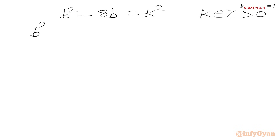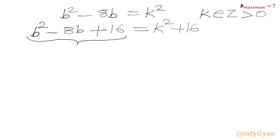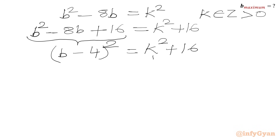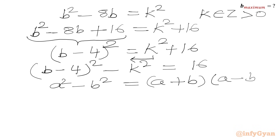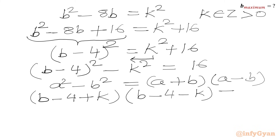We apply the completing the square method: starting with b² − 8b = k², we add 16 to both sides to get (b − 4)² = k² + 16. Rearranging, we obtain (b − 4)² − k² = 16.